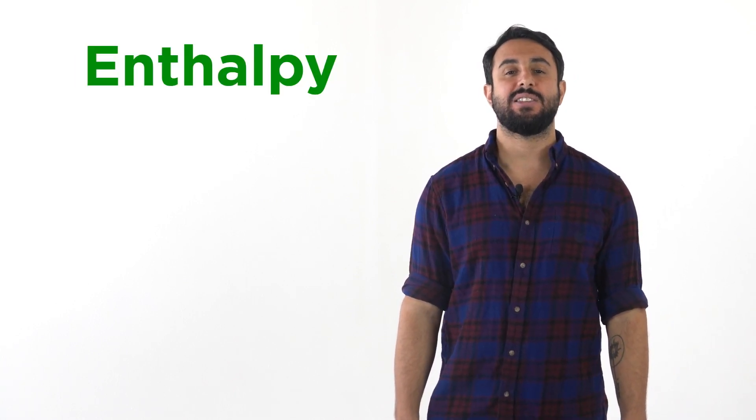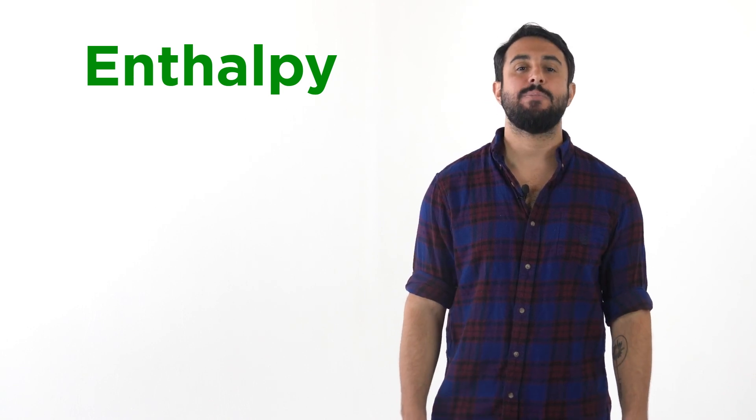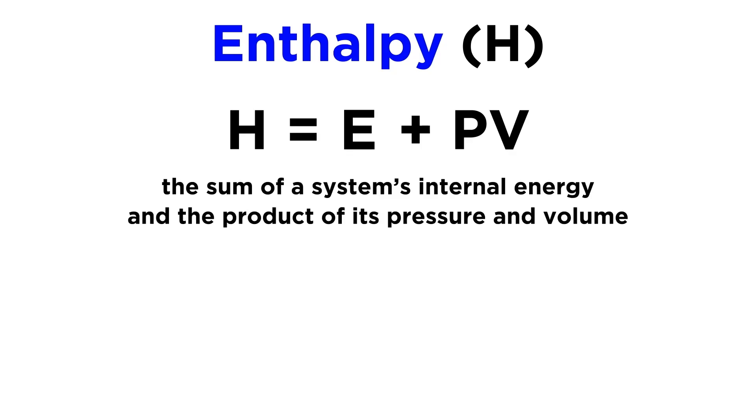This will involve a concept called enthalpy, so let's make sure we define this term. The property that chemists will use to describe the thermodynamics of chemical and physical processes is called enthalpy. This is symbolized with a capital H, and it is defined as the sum of a system's internal energy and the product of its pressure and volume, or H equals E plus PV.